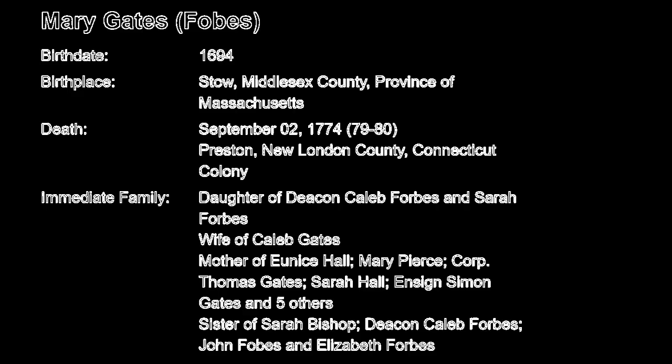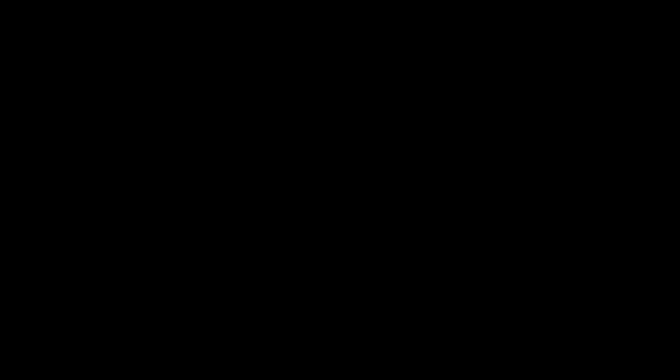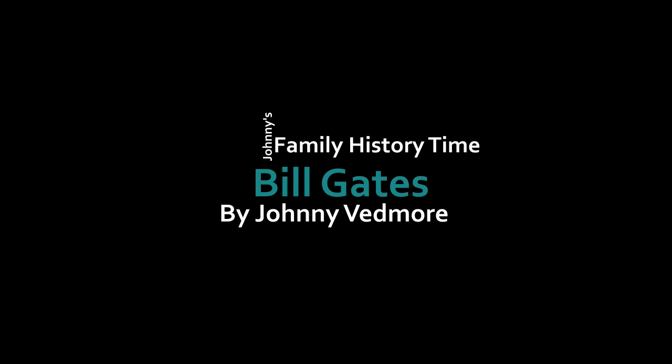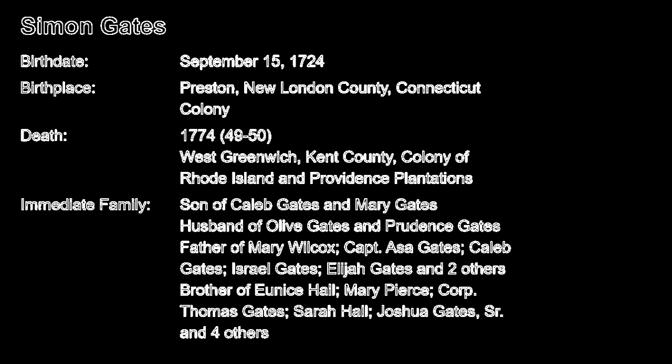Caleb Gates would marry Mary Forbes on the 6th of June 1716, and they would eventually move to another of the 13 British colonies — Connecticut. They would also have a large family: ten children were registered to Caleb and Mary Gates in Preston City, New London. Those ten children were Thomas, Joshua, Jesse, Sarah, Jonathan, Eunice, Nathan, Mary, Caleb, and the youngest, Simon Gates.